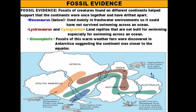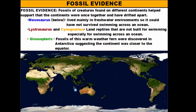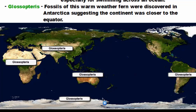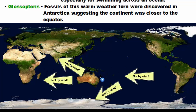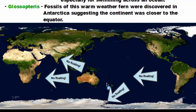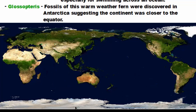Glossopteris is a fern that was found in South America, Africa, India, Antarctica, and Australia. One problem is that it would have been impossible for their seeds to have been windblown across these oceans or to have floated across and then germinated. The continents today are separated by massive bodies of water — the Pacific, Indian, and Atlantic Oceans — making it impossible for their seeds to travel that far.